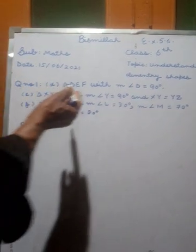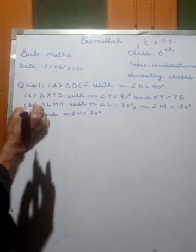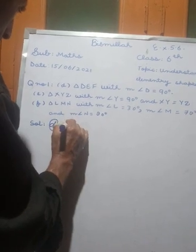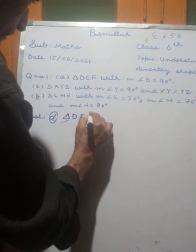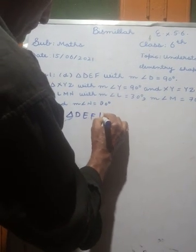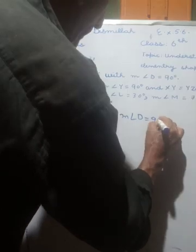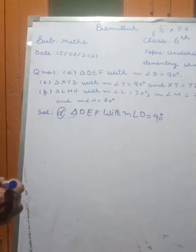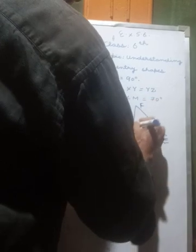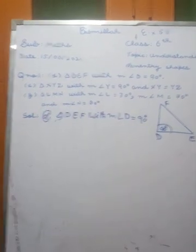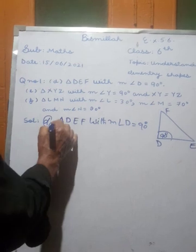Question number one, part number D: triangle DEF, with angle D equal to 90 degrees. Triangle DEF, angle D is equal to 90 degrees. This is the right answer — it is a right-angled triangle.